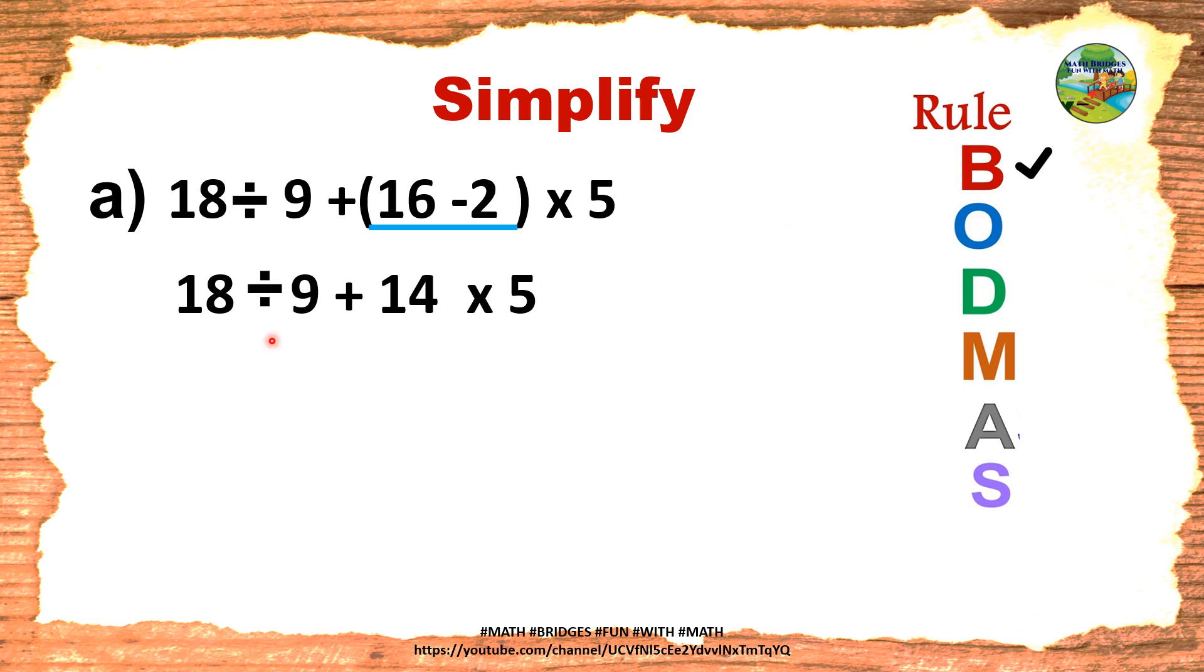Now of. Search in the second step here. Is there any O, F, of is written here? No. So cross out. Now D, D for division. Is there any division in the question? Yes, here. Underline that part. So we will solve only this underlined part now. 18 divided by 9 is 2 plus remaining all same, 14 into 5. Now tick this one, division is over.